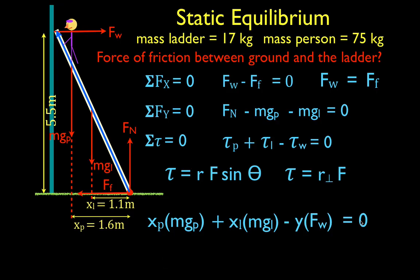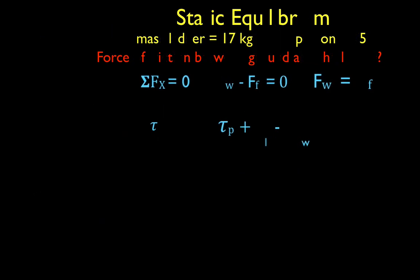We actually have eight quantities in this equation, and we know seven of the eight. We know each of the lever arms, we know the masses, we know the acceleration due to gravity, and we know the 5.5-meter lever arm for the wall. We don't know the wall force. But because we know everything except that force, we can solve pretty easily for it. And once we have the wall force, we'll know that the friction force is equal to it in magnitude.